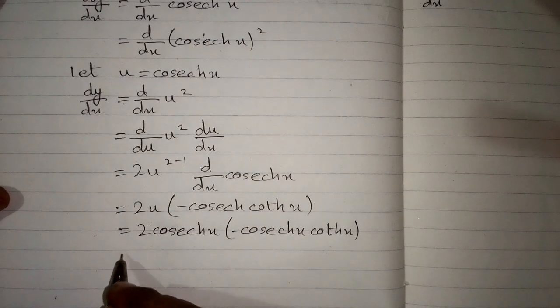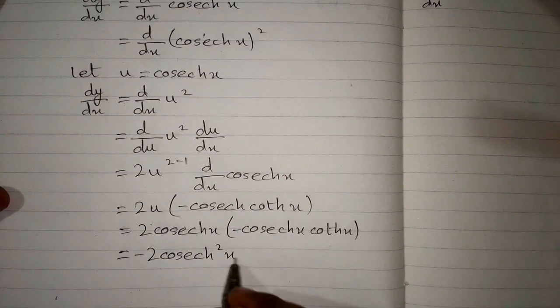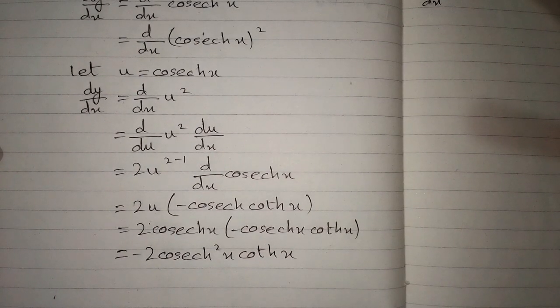And the final answer is minus 2 hyperbolic cosec squared x hyperbolic cot x. Thank you very much.